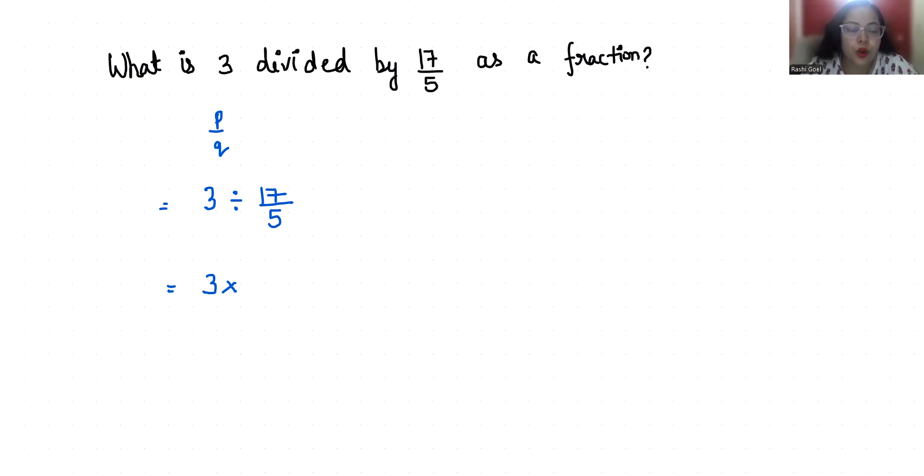This is the right hand side number. The reciprocal of 17 by 5 is 5 by 17. Now 3 is the same as 3 over 1. So 3 times 5 by 1 times 17, that is 15 by 17.